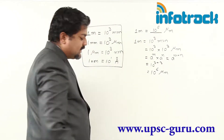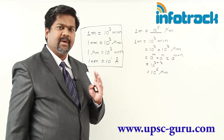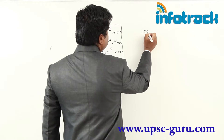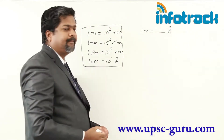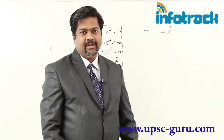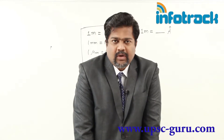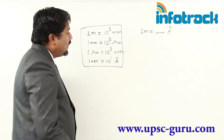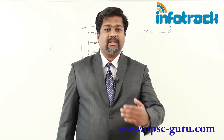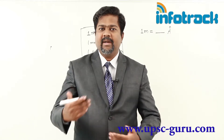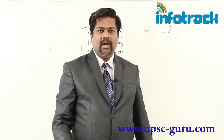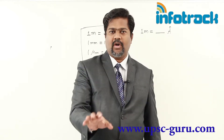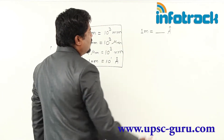So the first result: 1 meter equals 10 raised to 6 micrometers. Please take it down. Now try to solve: 1 meter equals how many angstroms? Try to solve yourself using previous knowledge, then check whether your answer matches mine. Pause this video, try yourself, and then resume. Here, 1 meter equals 10 raised to 3 millimeters, then 10 raised to 3 micrometers — so far 10 raised to 6 micrometers.